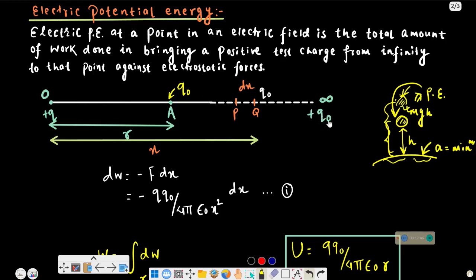Similarly, for a positive test charge q₀ in the electric field of charge plus Q, the electric potential energy is stored in the system. As q₀ moves in the field, the charge distribution affects the electric field. The potential energy depends on the separation and configuration of the charges in the system.